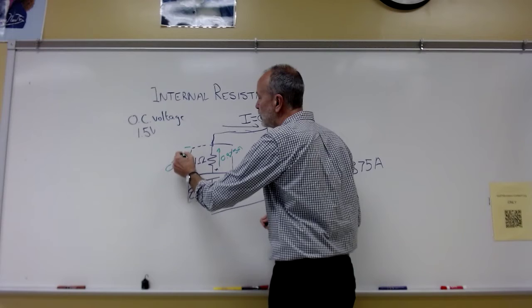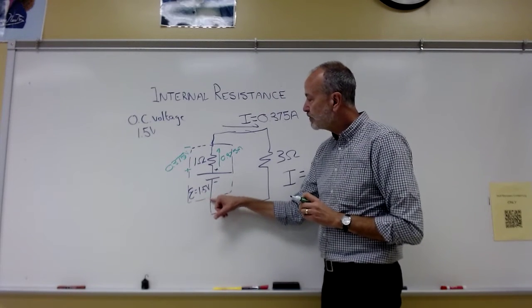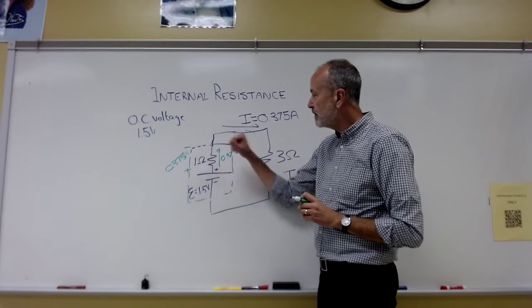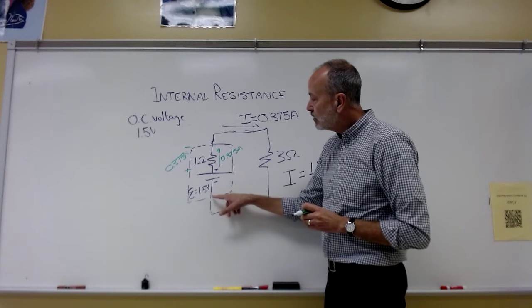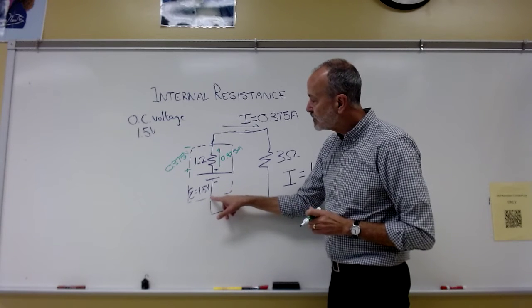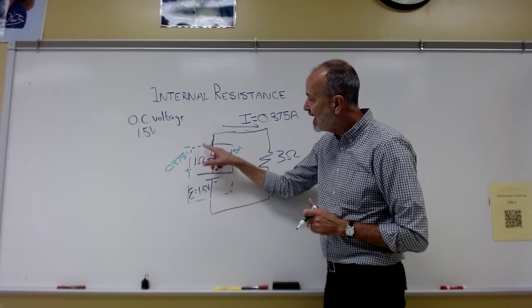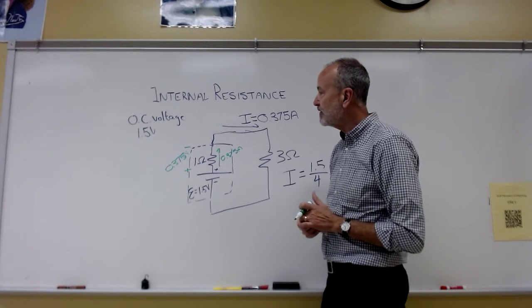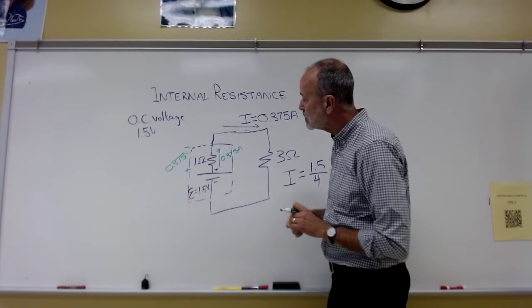I times R is going to be a voltage difference of 0.375 volts. So between this spot, the bottom of the battery there, and the top of the battery, between the negative end and the positive end, let's figure it out. That potential difference will be, well, we went up 1.5, and then we went down 0.375, and that ends up being 1.125.